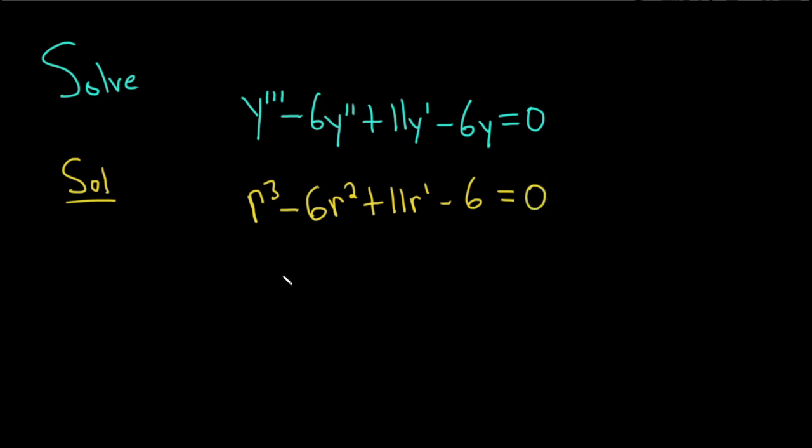So this is called the characteristic or auxiliary equation. So now what we do is we find the roots of this equation. I'm going to write it down one more time. So this is r cubed minus 6r squared plus 11r minus 6, and that's equal to 0.